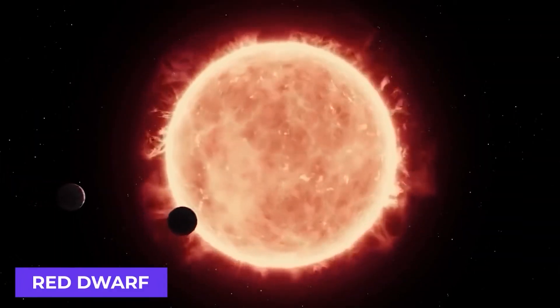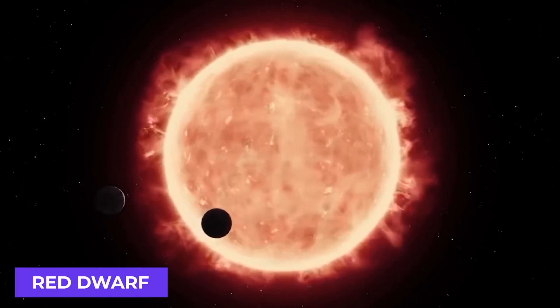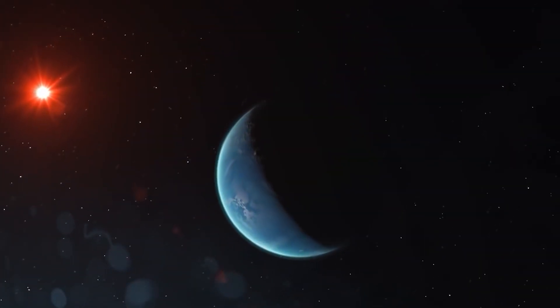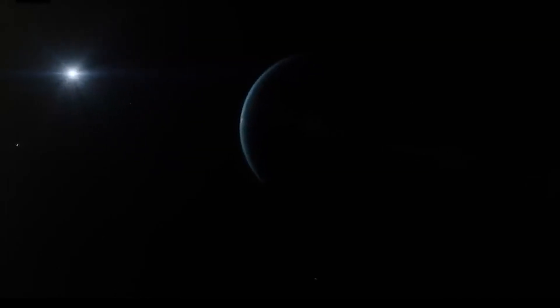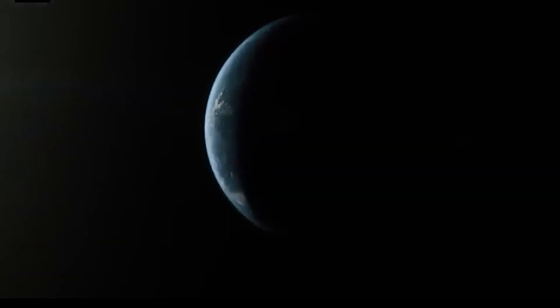However, red dwarf stars are not as intensely hot as yellow dwarf stars like our Sun. There is a possibility that the planet Proxima b has water and an atmosphere that shields it from the intense heat of its surface, while also scattering heat to the planet's dark side. How do we know for sure?